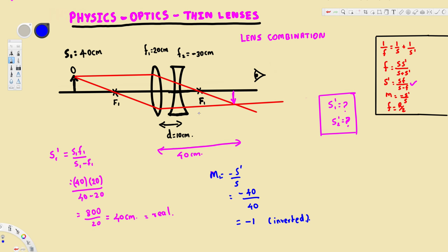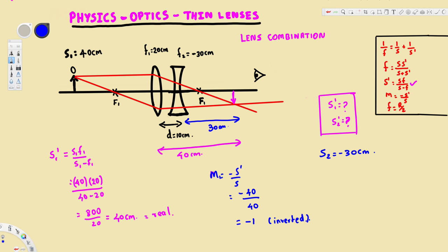Now let's look at the second lens. For the second lens, the object is the image formed by the first lens. The distance between the lenses is 10 centimeters, and the first image is 40 centimeters from the converging lens. Subtracting 10 centimeters gives 30 centimeters. Since this distance is behind the second lens, the object distance for the second lens is negative 30 centimeters.